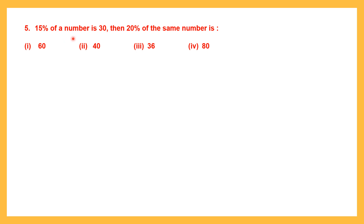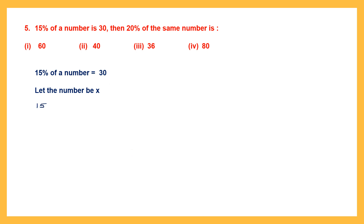Question 5. 15% of a number is 30. Then 20% of the same number is how much? We don't know the number, so let that number be x. So 15% of x equals 30, which means 15 by 100 into x equals 30. Now we can find the value of x.